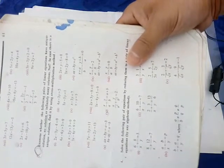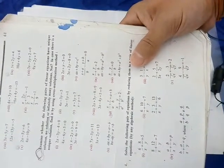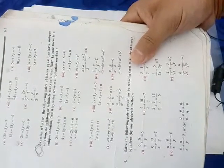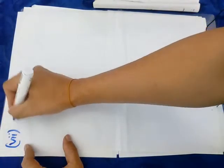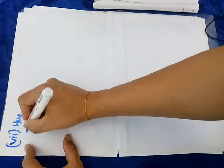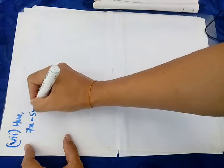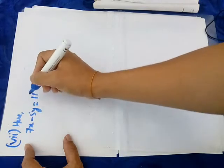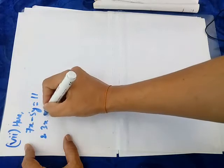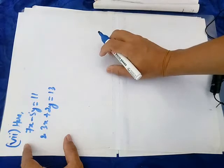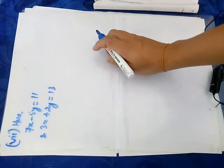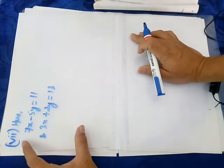Question number 7: 7x minus 5y is equal to 11, and 3x plus 2y is equal to 13. I'm going to check and examine the algorithm — whether it has any solution, no solution, or infinitely many solutions.